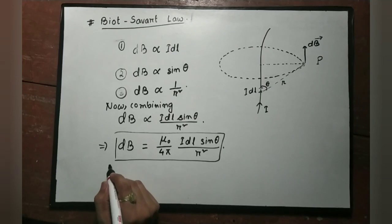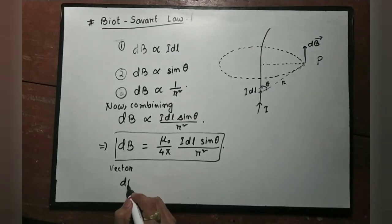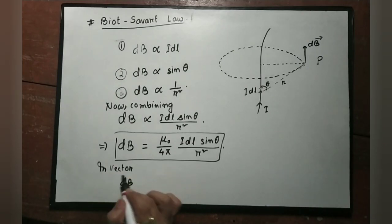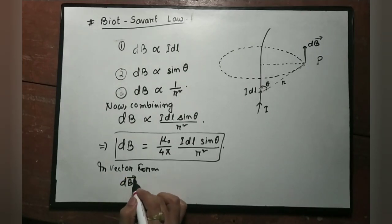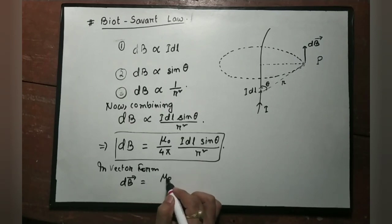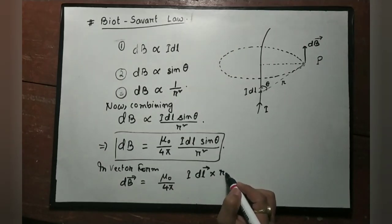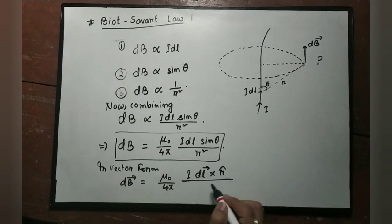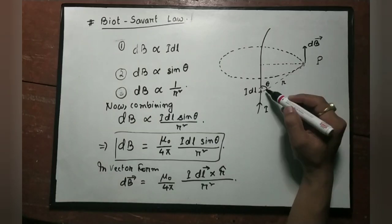We need to express dB in vector form. The vector form is: dB vector equals mu naught by 4 pi times I dL vector cross r-cap divided by r squared.